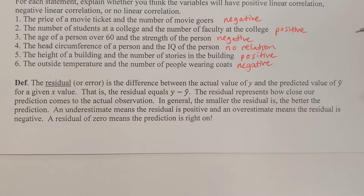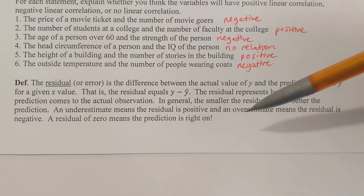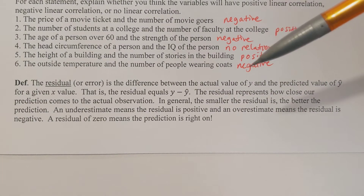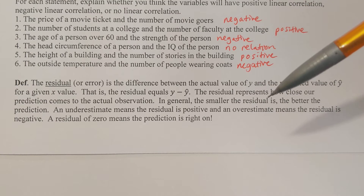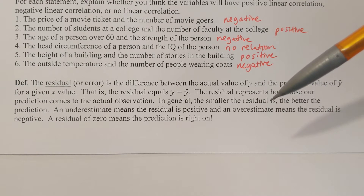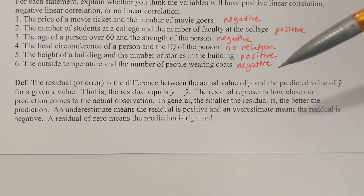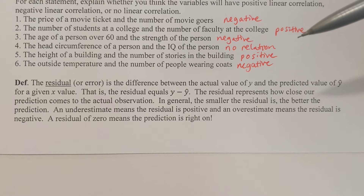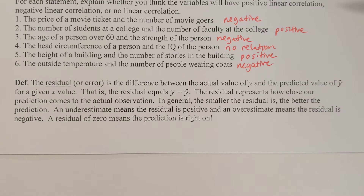An underestimate means that the residual is positive, and an overestimate means that the residual is negative. A residual of zero means that the prediction is right on. An underestimate means the data value is above the regression line, and an overestimate means the data value is below the regression line.